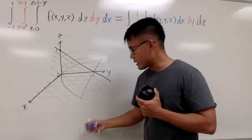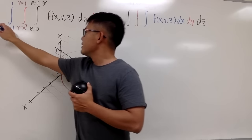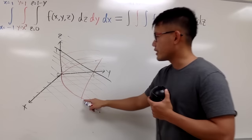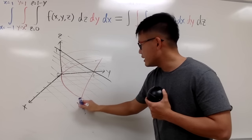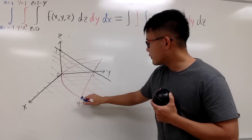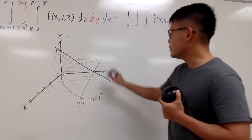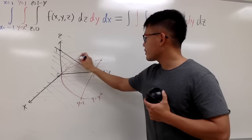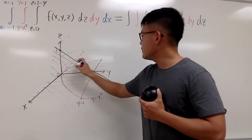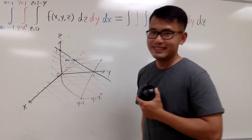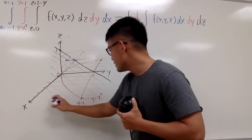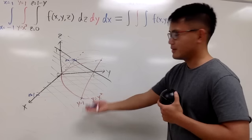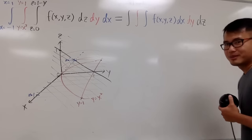The last part is the easiest: dx, meaning x goes from negative 1 to 1. That's exactly the intersection of the line y equals 1 and the curve y equals x squared. If you extend the x-axis back to negative, this is x equals negative 1, and on the other side, this is x equals 1.